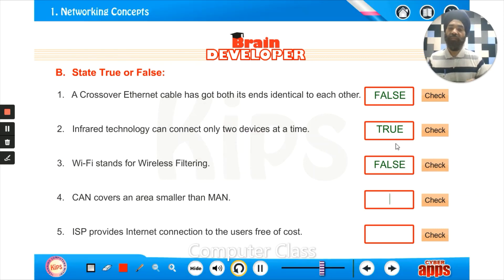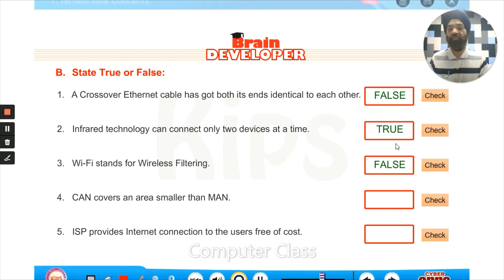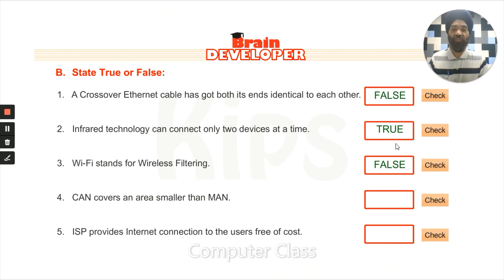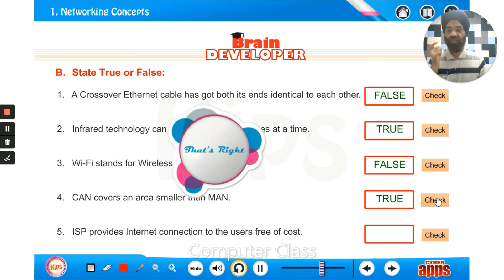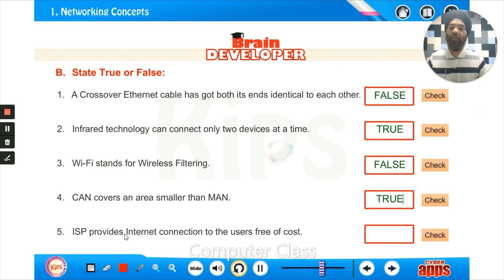CAN is a campus area network, and MAN is a metropolitan area network, so CAN covers a smaller area — that is true. ISP provides Internet connection to users free of cost — no, that is false, as we pay a monthly subscription for Internet service.